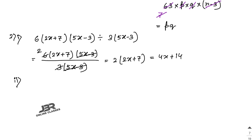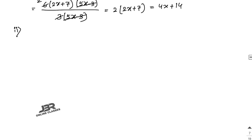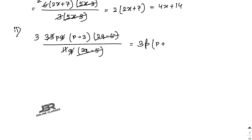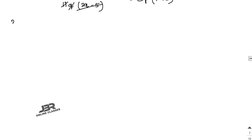Sum number 2, part 2: 33pq(p + 3)(2q − 5) divided by 11q(2q − 5). The (2q − 5) terms cancel out, 33 over 11 gives 3, and q cancels. So the answer is 3p(p + 3).